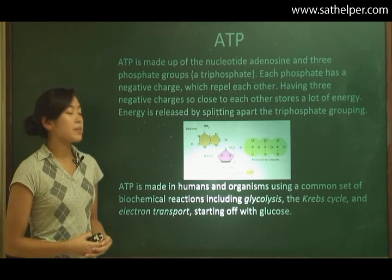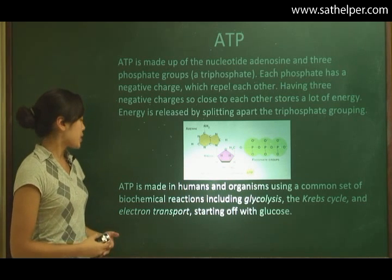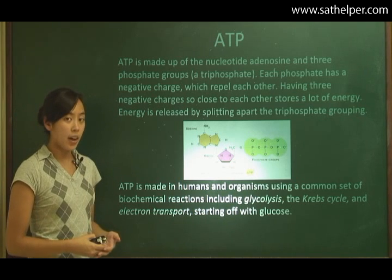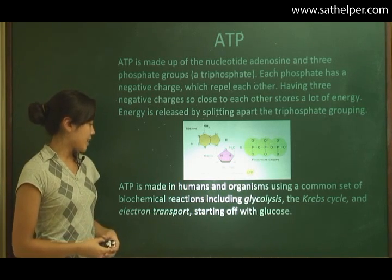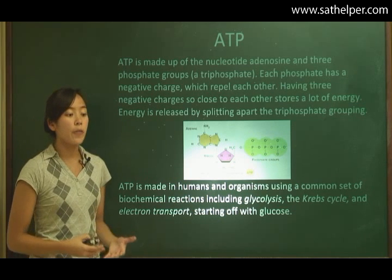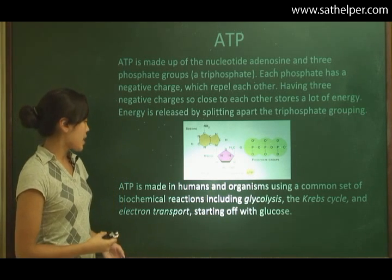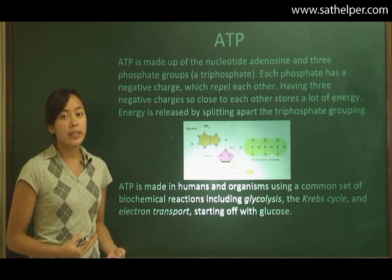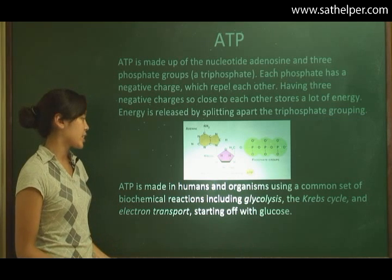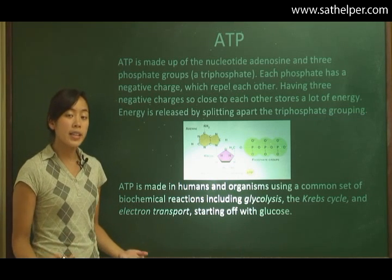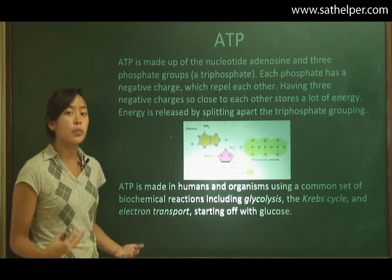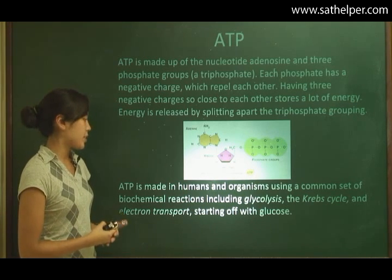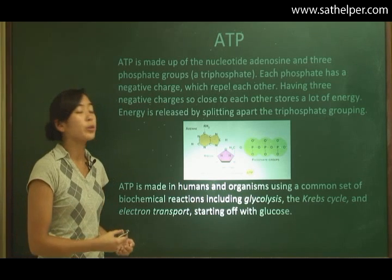ATP is made in humans and organisms using a common set of biochemical reactions, including glycolysis, the Krebs cycle, and electron transport, starting off with glucose. ATP is necessary for all living things to be able to function, and it's made in the cell. We all use glycolysis, the Krebs cycle, and electron transport, and this all starts off with glucose.